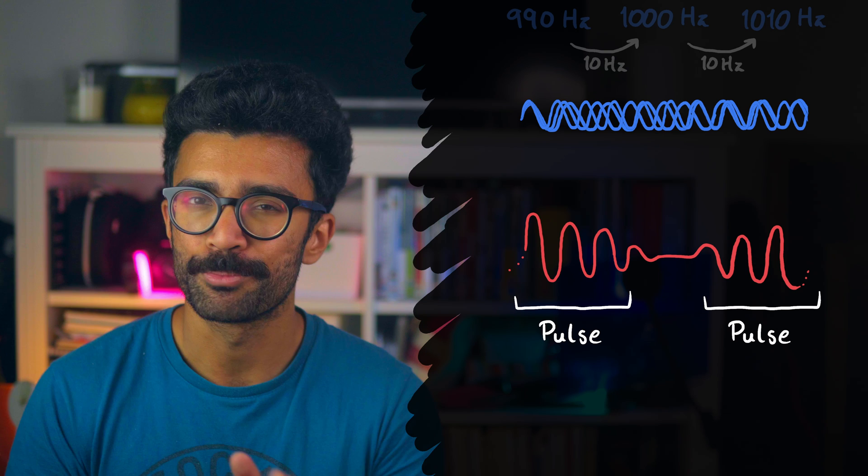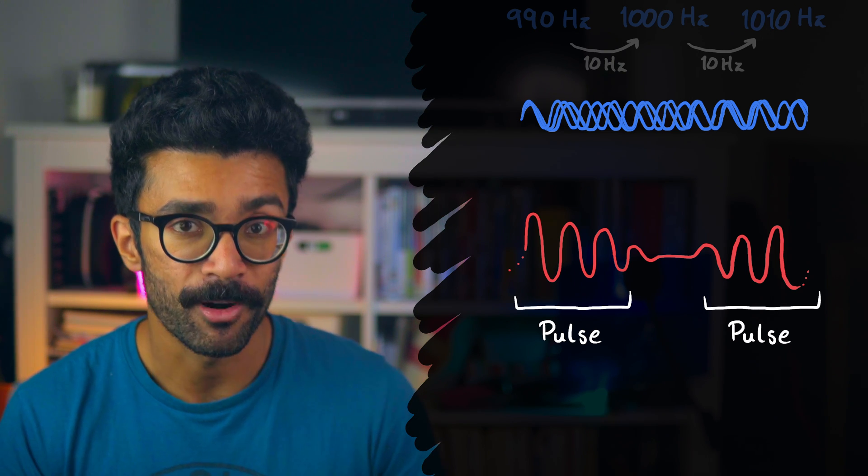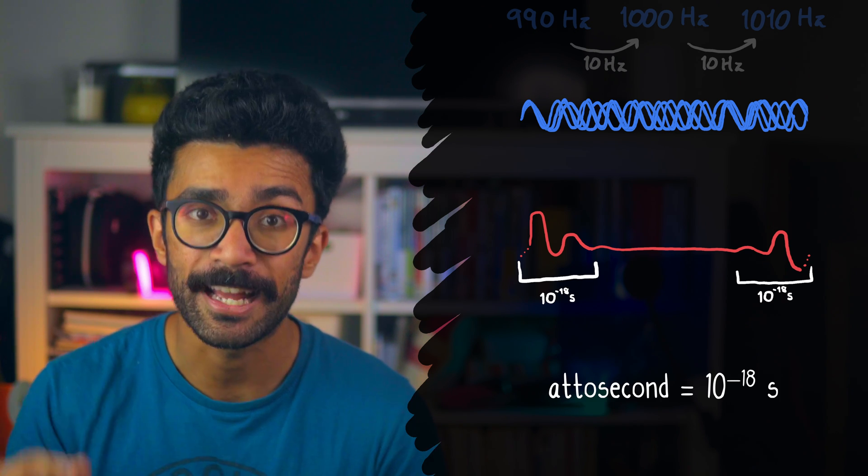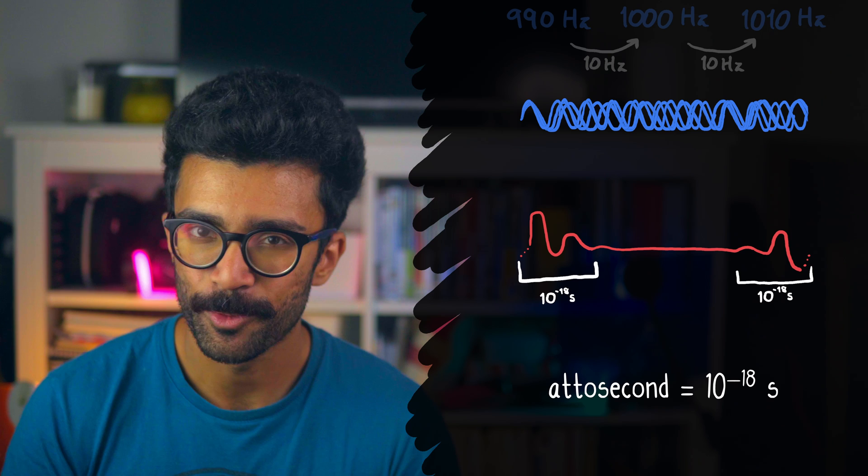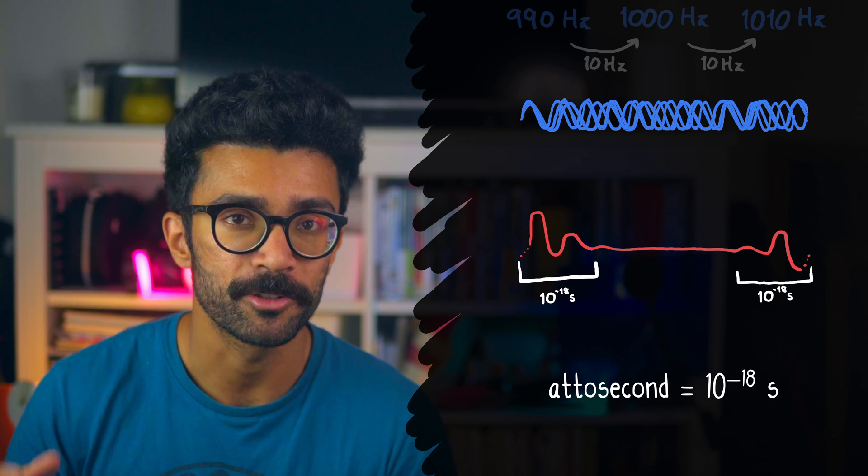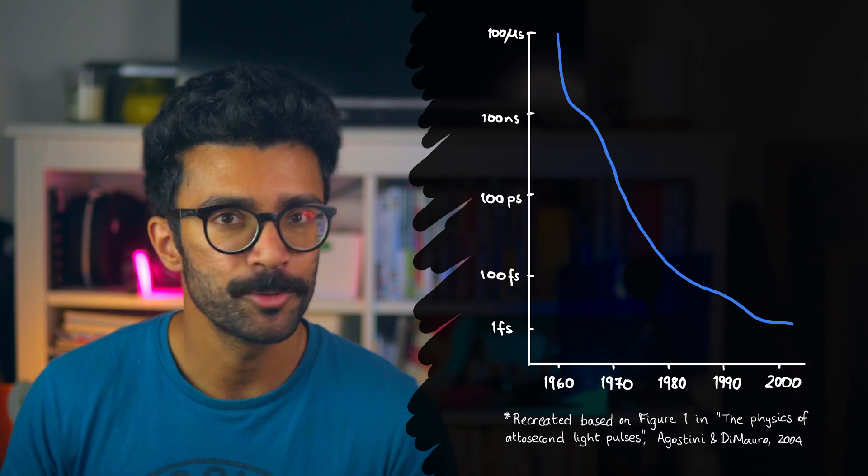Now, everything we've discussed so far isn't brand new physics. The work that our three Nobel laureates did was in trying to reduce the width of these pulses so that they were on the order of attoseconds. When lasers were first invented, scientists very quickly developed methods to create pulses that were on the order of microseconds. And this quickly progressed to nanoseconds.